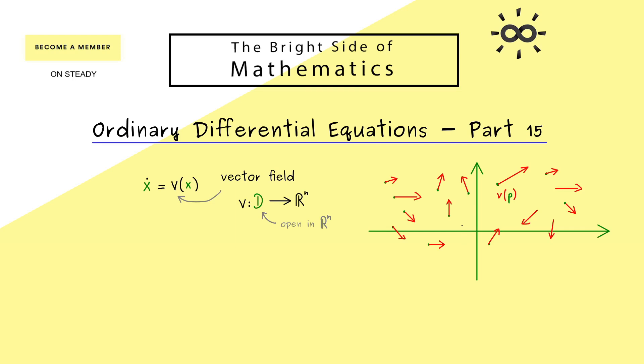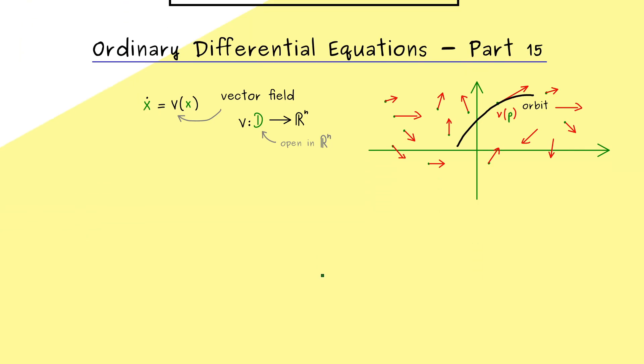So at each point P in D we put the vector v of P to it. Moreover, we also learned that an orbit is simply a curve inside here that is tangent to our vectors. So in some sense it's the image of a solution for our ordinary differential equation here. And now since we have discussed solutions in a general sense before, we can now also apply this knowledge to orbits.